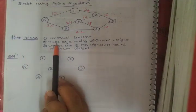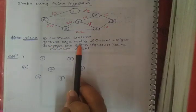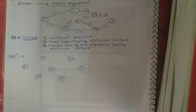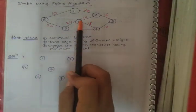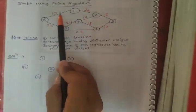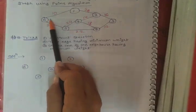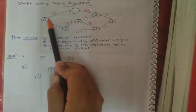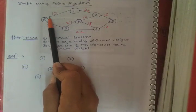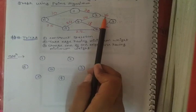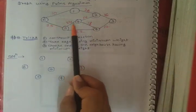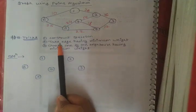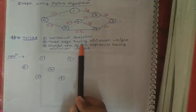Now our second step: we have to take the edge having minimum weight. Looking at the given graph, we find which edge has the minimum weight. In this graph, the edge from node 6 to node 1 has weight 10, which is the minimum. Other edges have weights 12, 16, 24, 14, and so on. So we take edge 6-1 with weight 10.